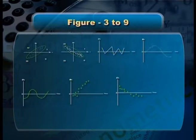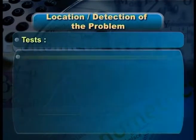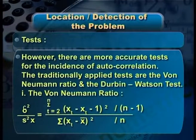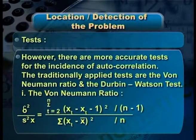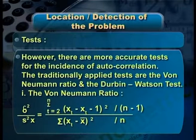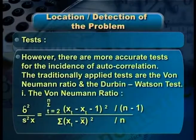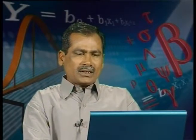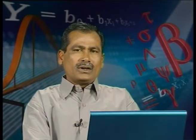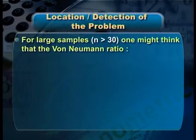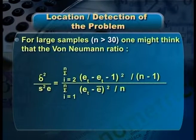Apart from the graphical method, there are other tests to detect the problem of autocorrelation more accurately. Among the important tests are the von Neumann ratio and the Durbin-Watson test. The von Neumann ratio is defined as δ²/s² = Σ(xt − x(t−1))² / (n−1) all divided by n. However, this test is not popular because it is only applicable when there is a large sample, that is when n > 30.